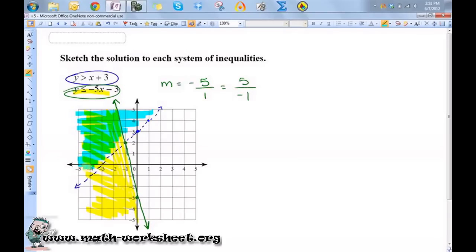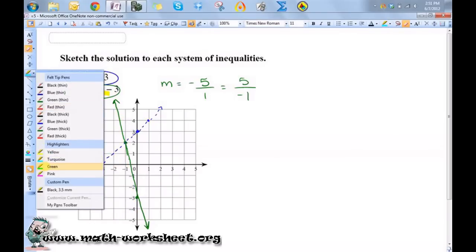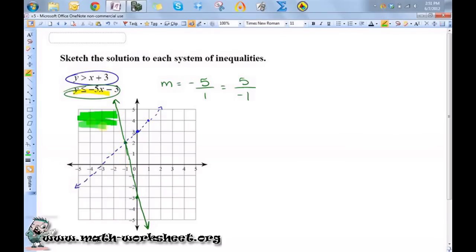So the area that ended up being colored green is the area that represents both. So what I'm going to do is erase these two colors and then fill this in. So this is the area that needs to be shaded.